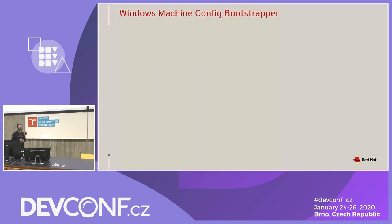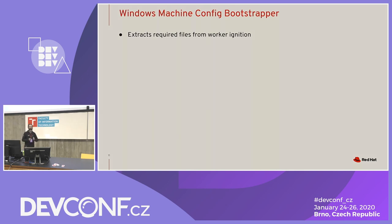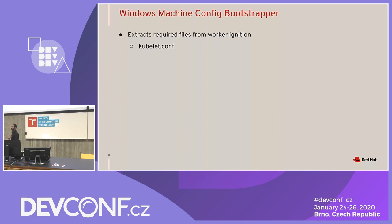Let's talk about the Windows Machine Config Bootstrapper. This binary is copied onto the Windows node by the playbook. It takes the worker ignition — think of it as a packaged file containing cluster information. We extract the kubelet configuration from it. We're doing this for now, but moving forward we'll construct our own kubelet configuration specific to Windows.